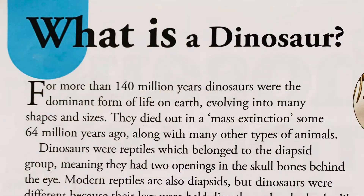What is a dinosaur? For more than 140 million years, dinosaurs were the dominant form of life on Earth, evolving into many shapes and sizes. They died out in a mass extinction some 64 million years ago, along with many other types of animals.